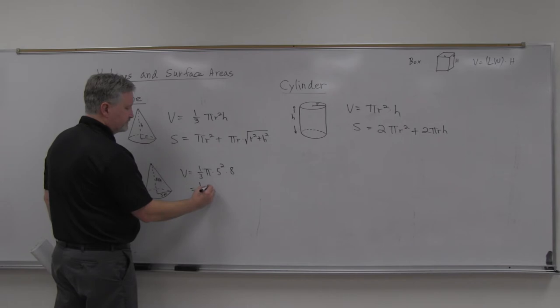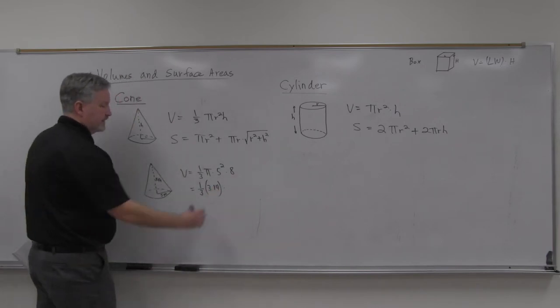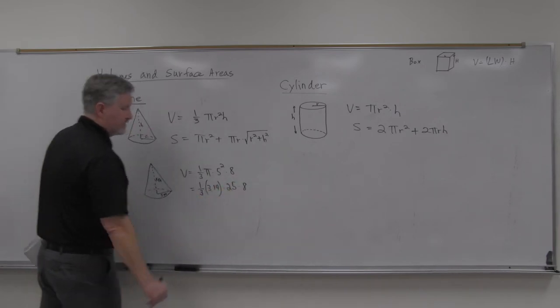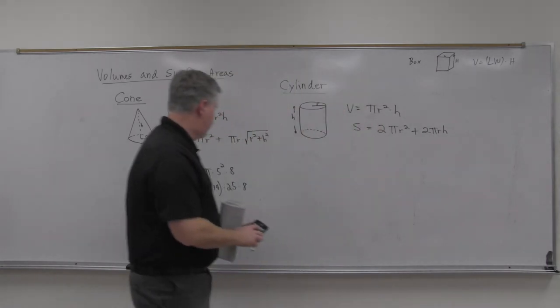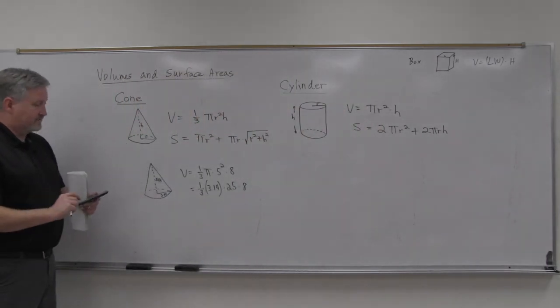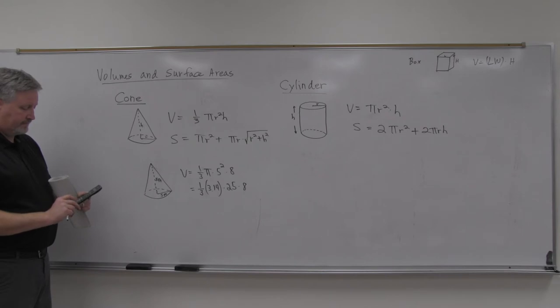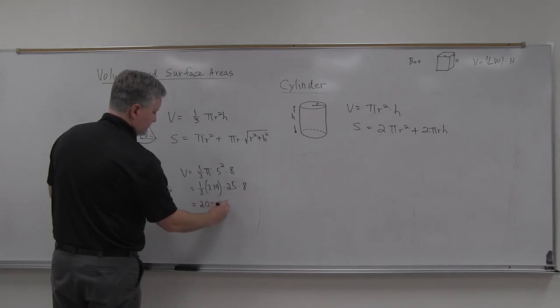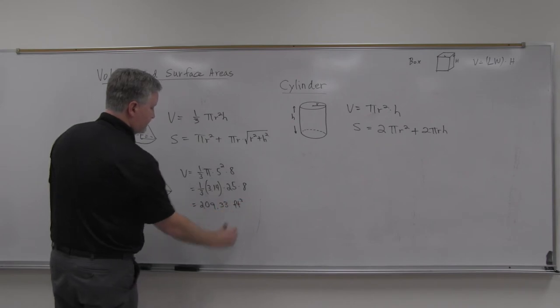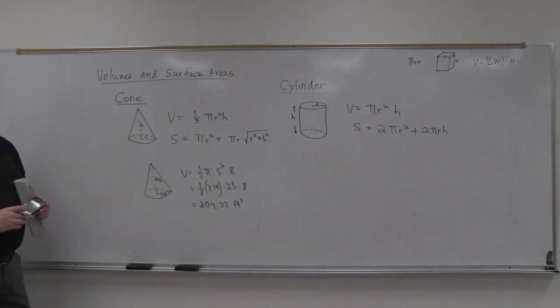Do it however you want. Again, they probably will use 3.14 for your pi. You can multiply those however you want to. You can do the 25 times the eight, and then times the 3.14, and then times the one third. It doesn't matter the order there that you do it. But here's what you should get, if you use 3.14 anyway. 209.33. I think they'll do two places, if I remember correctly. And that's volumes of the feet cubed. 209.33 feet cubed.